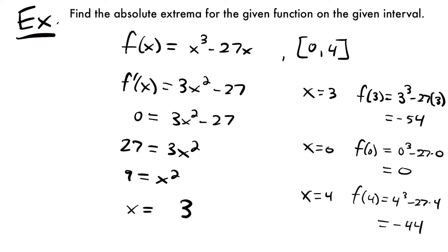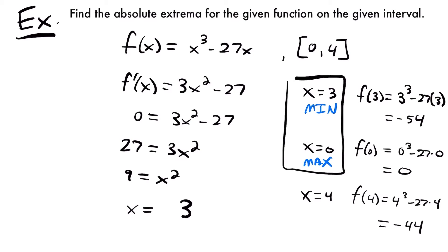Now we compare the y values for each of our x values. We had our critical value of 3, and our two endpoints, giving values of negative 54, 0, and negative 44. Zero is the greatest value since the rest are negative, so x equals 0 is our max. Comparing the other two, negative 54 is less than negative 44, which makes x equals 3 our minimum. So our maximum is at x equals 0, or the point (0, 0), and our minimum is at x equals 3, or the point (3, negative 54).